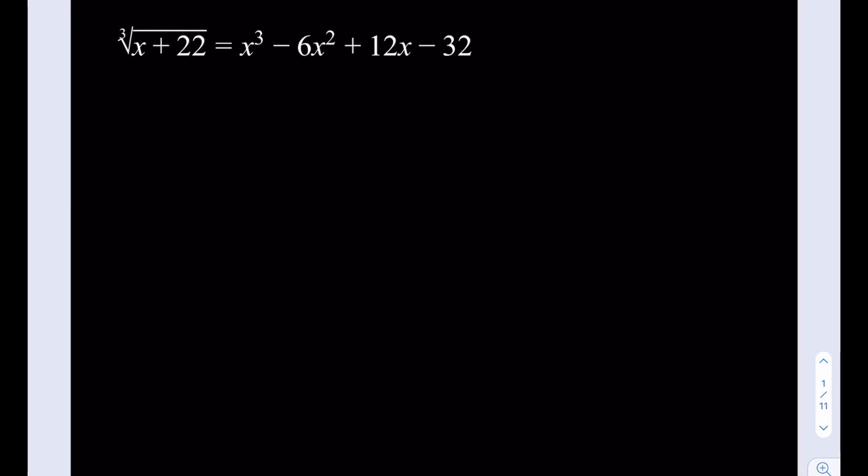The left hand side of this equation is the cube root of something, and the right hand side is x cubed minus 6x squared plus 12x minus 32. So what I'm going to do is make the right hand side into the cube of something. I'm going to write it as x cubed minus 6x squared plus 12x minus 8. If you're familiar with binomial theorem and perfect cubes, then you will know that this is equal to x minus 2 quantity cubed, but I just got to adjust with the minus 24.